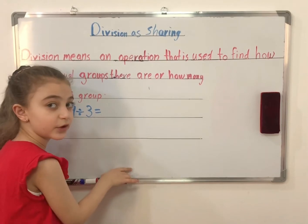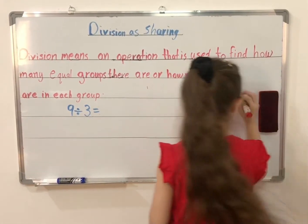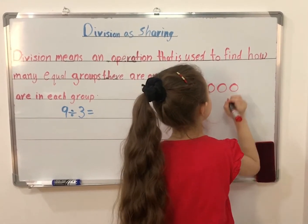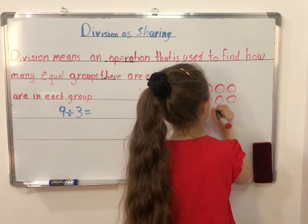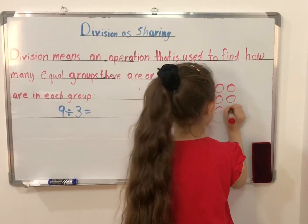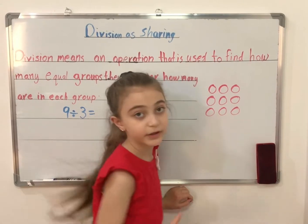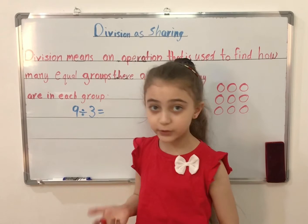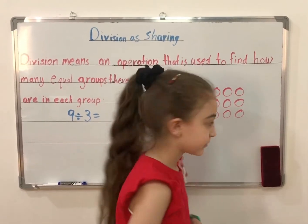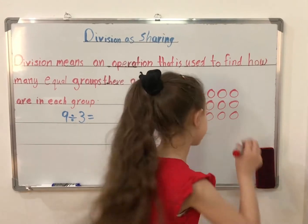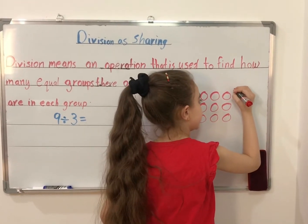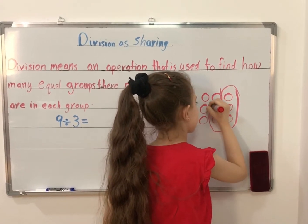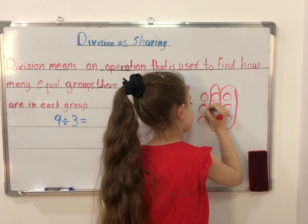Now let's draw the array. Here we draw the array. Can we make three groups? Yes! Here is the first group, the second, and the third.